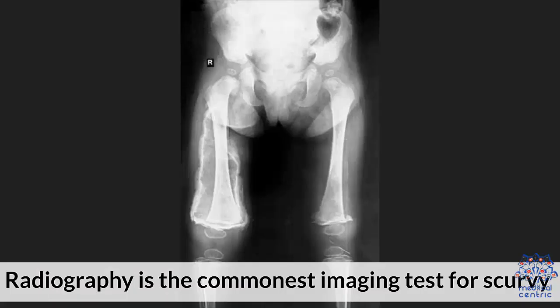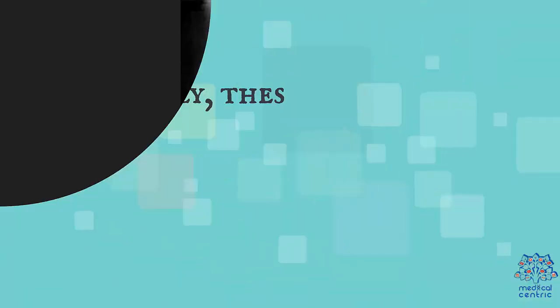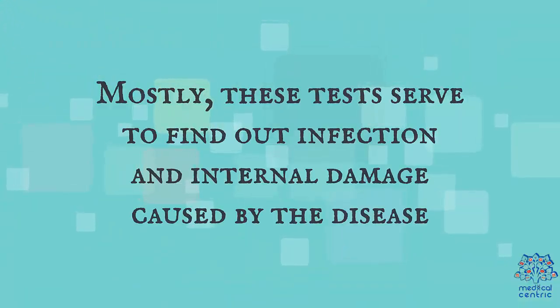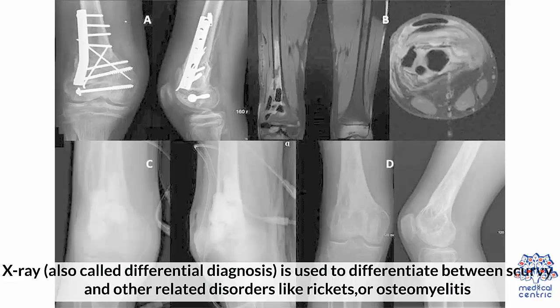Imaging tests. Radiography is the most common imaging test for scurvy. These tests serve to find out infection and internal damage caused by the disease. X-ray, also called differential diagnosis, is used to differentiate between scurvy and other related disorders like rickets or osteomyelitis.